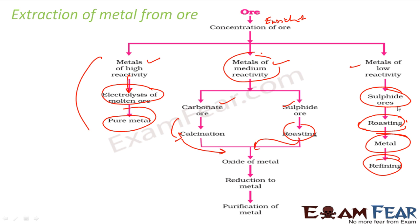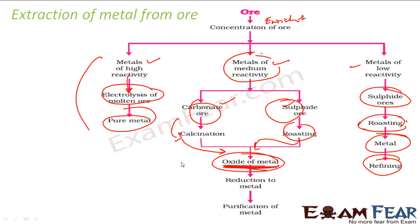For low reactive metals: you get sulfide ores, you do roasting, you get the metal, you refine it. For medium reactive: you may get carbonate or sulfide ores, you convert them into oxide ores — if you have carbonate you use calcination, if you have sulfide ores you use roasting — then you have the metal oxide, you reduce it, you purify it, that is all. For high reactive, you use electrolysis.